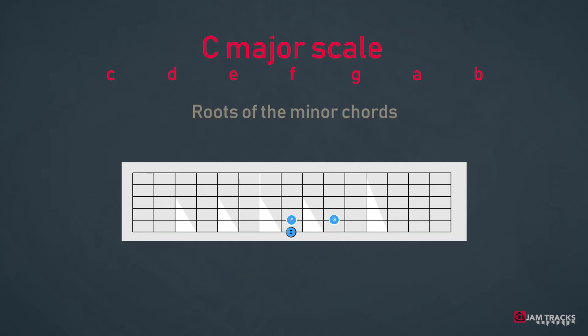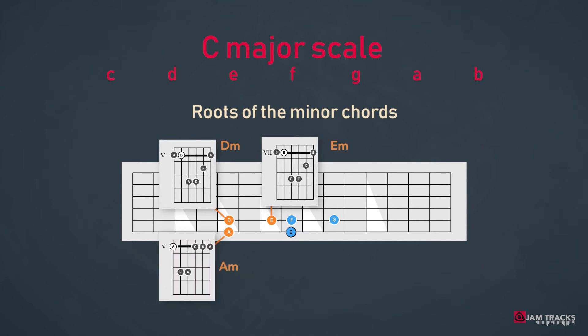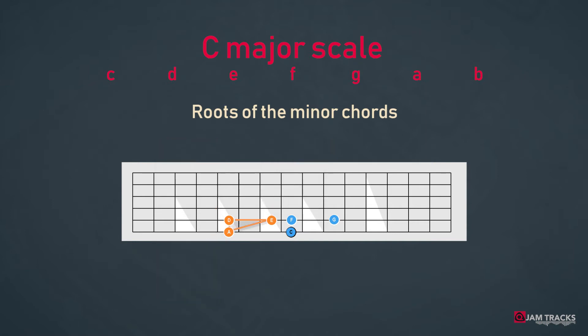In the same major key the root notes of the minor chords are placed on the neck in this way. E is sitting on the fifth string diagonally underneath the tonic C. On the same fifth string and two frets down you'll find the note D and right above the D there's a note A. So these are all minor chords. E minor, D minor, A minor and let's call this the minor triangle.